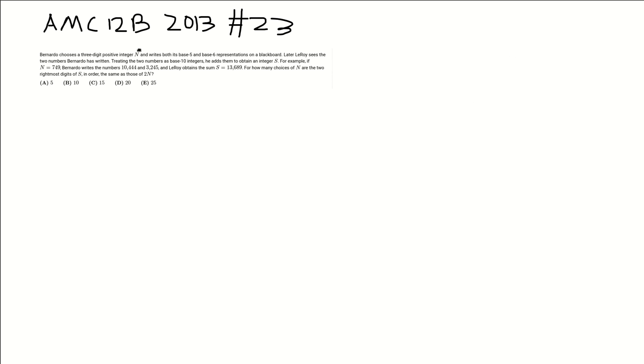Alright, so we have a pretty interesting question from the AMC 12B 2013 exam. It's a pretty long problem statement, so let's try to digest it. We have somebody choosing a number and then writing it down in base 5 and base 6. Seeing this base 5, base 6 sort of stuff kind of hints us to some modular arithmetic argument to solve this problem, perhaps.